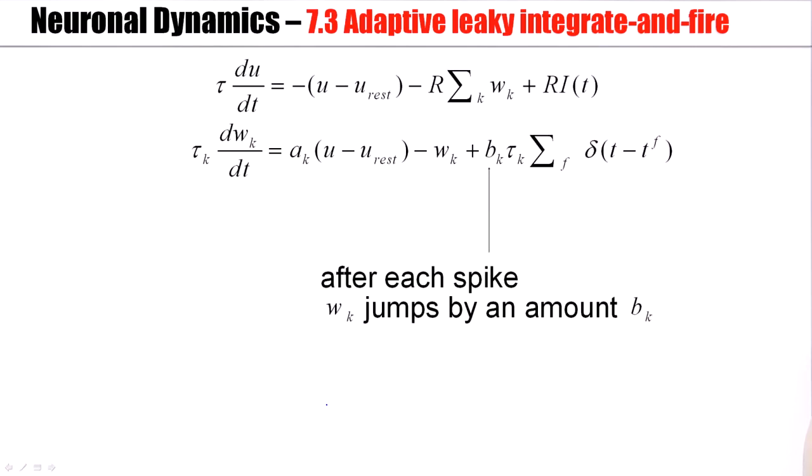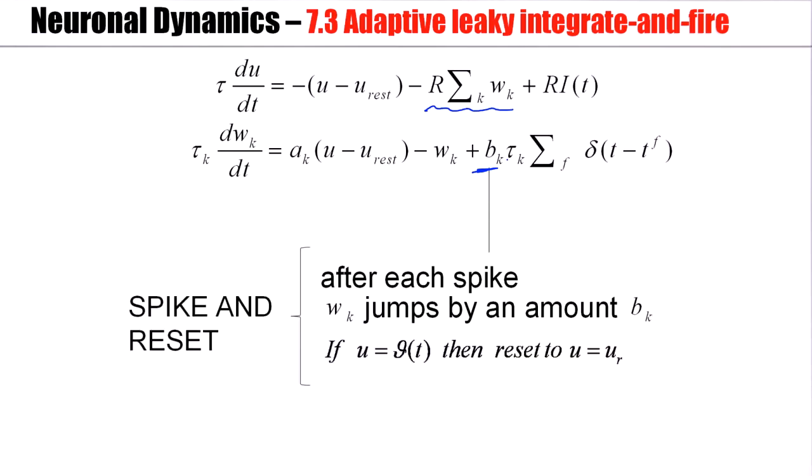Now we said earlier this week that an exponential integrate-and-fire model is fine, but you need to add adaptation variables. And the same holds for the leaky integrate-and-fire model. Just add some adaptation currents, w_k, maybe five different adaptation currents. And each adaptation current w_k is controlled by the linear differential equation that we have seen before, where this parameter b_k controls the jump size at the moment of the reset. The voltage itself is reset to u_R. So it's just like in our discussion of the adaptive exponential integrate-and-fire model, except that the nonlinear term here has disappeared, and instead we work with a sharp threshold. The threshold itself can be time dependent, as before.